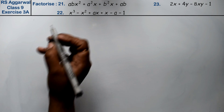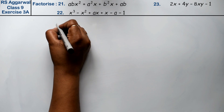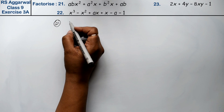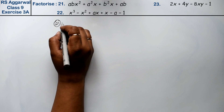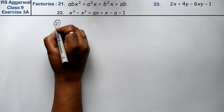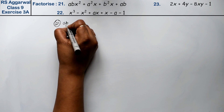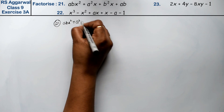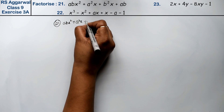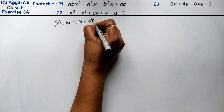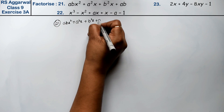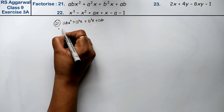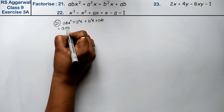Let's do question number 21 of exercise 3a, that is factorization of polynomials. Question number 21 is abx² plus a²x plus b²x plus ab. So how can we write this?